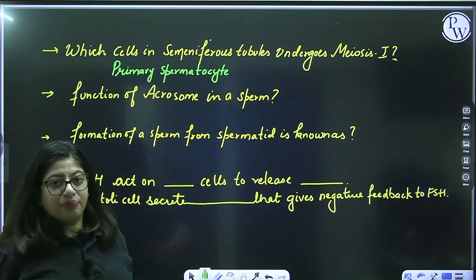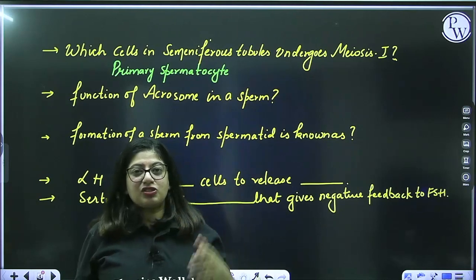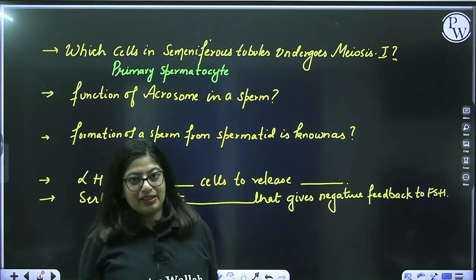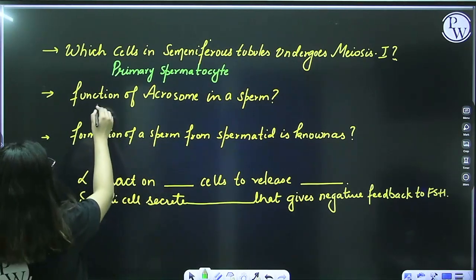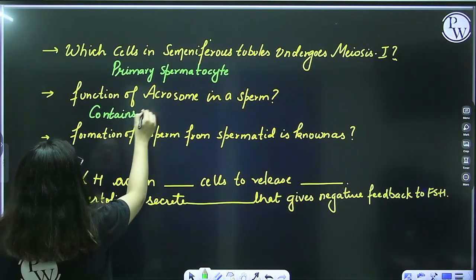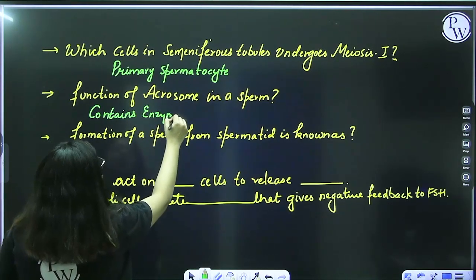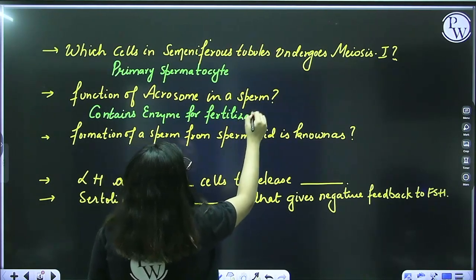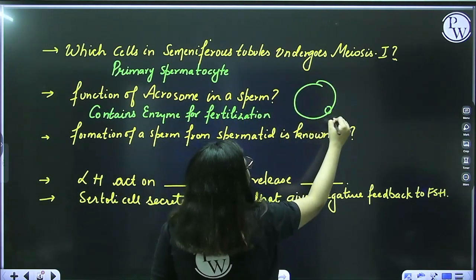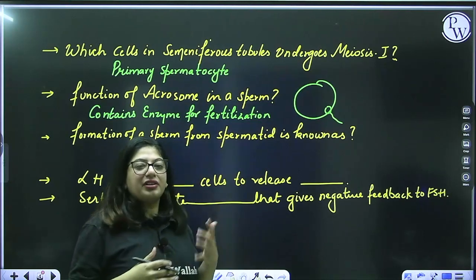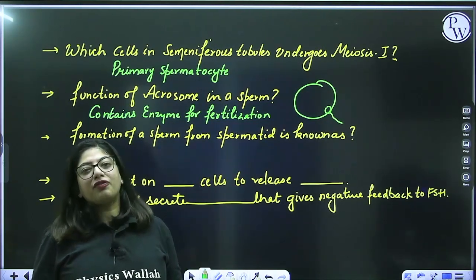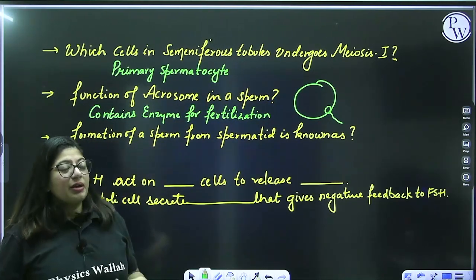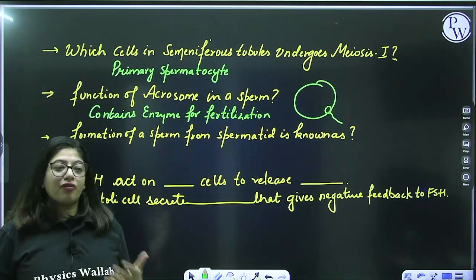Function of acrosome in a sperm: when you see the structure of a sperm, it has a cap-like structure known as acrosome on its head. It contains enzymes for fertilization. During fertilization, the sperm has to penetrate the wall of the ovum, so it needs digestive enzymes — and those are present in the acrosome, because acrosome is a cluster of Golgi bodies.